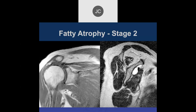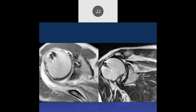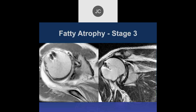Another case shows a retracted supraspinatus tear with a prior surgical anchor in the humeral head. Looking at the supraspinatus muscle, there appears to be about equal amounts of fat and muscle — Stage 3. The construct has failed and is retracted back. Stage 3 is generally not favorable for repair.